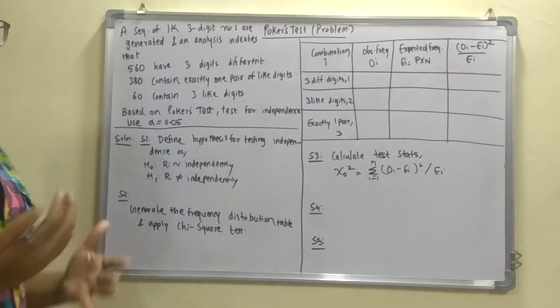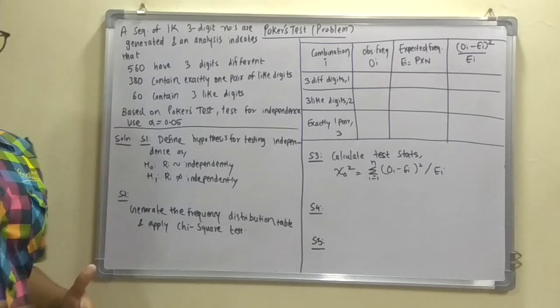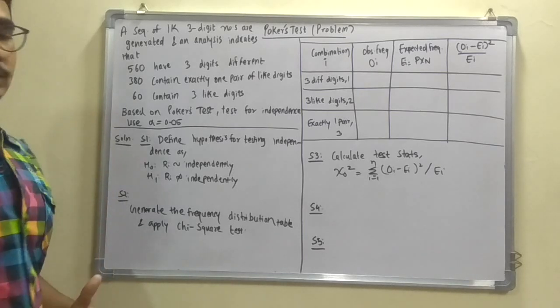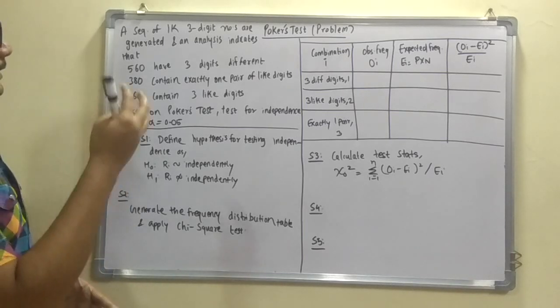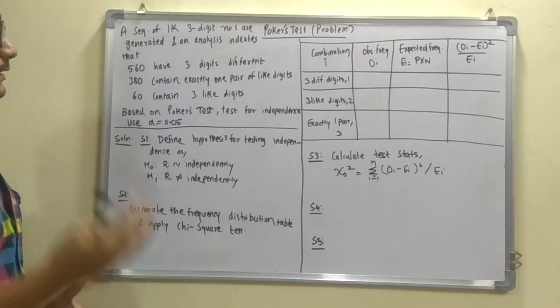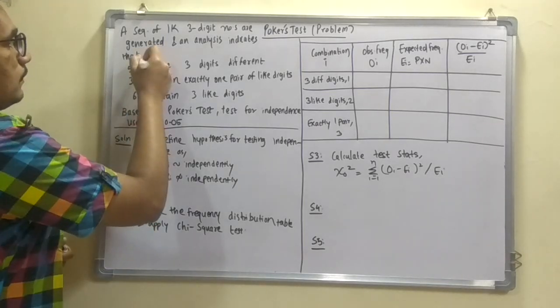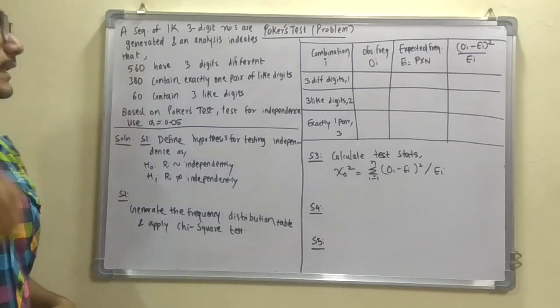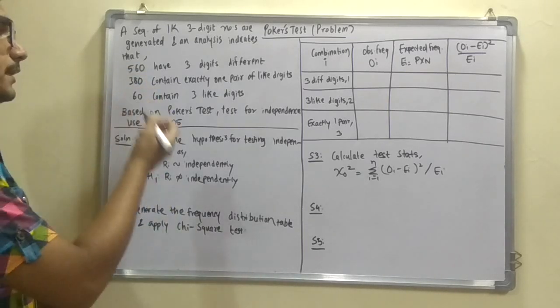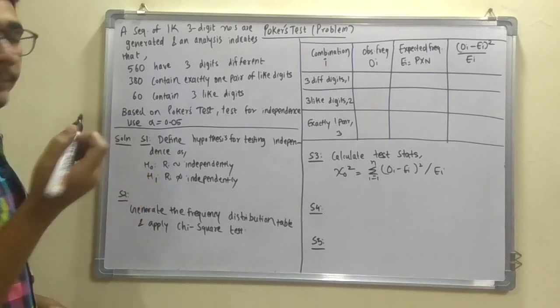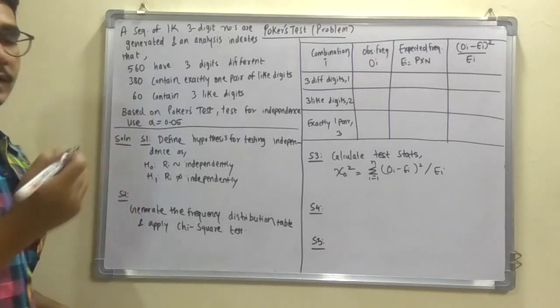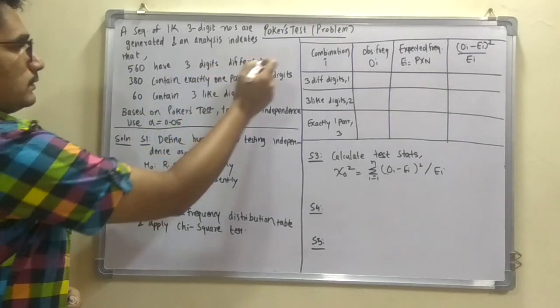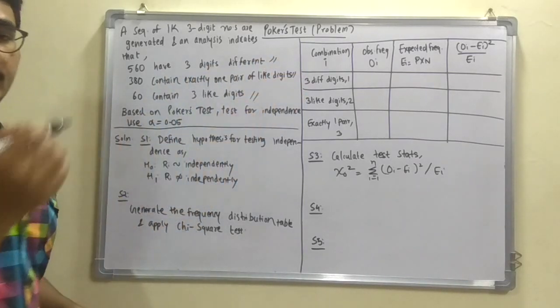So first of all there is a problem which goes like this. There is a sequence of 1K that is 1000 numbers. And those numbers are 3 digit numbers. And they are generated and an analysis indicates that from this 1000 numbers 560 have 3 different digits, 380 contain exactly 1 pair of like digits, and 60 contains 3 like digits.